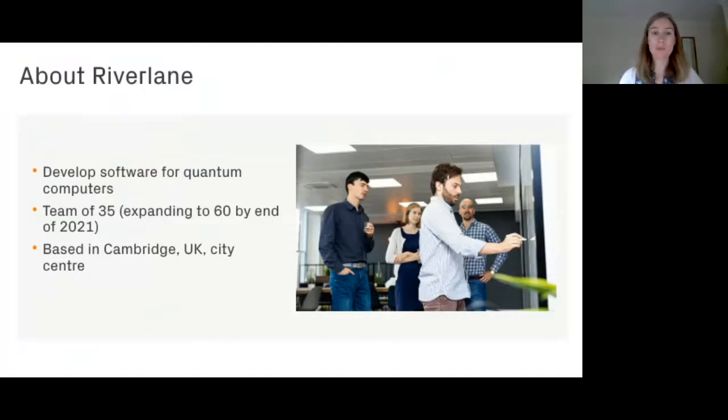So as a one sentence summary, Riverlane developed software for quantum computers. We are a team of currently 35 people but are expanding quite rapidly. So probably going to be about 60 by the end of the year. And we've also expanded quite rapidly before this time. So when I joined three years ago, we were pretty much just four people.